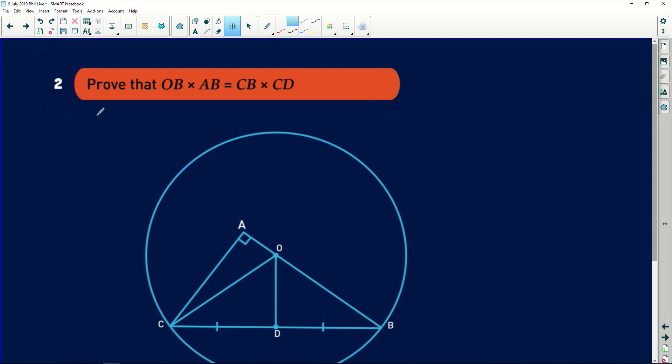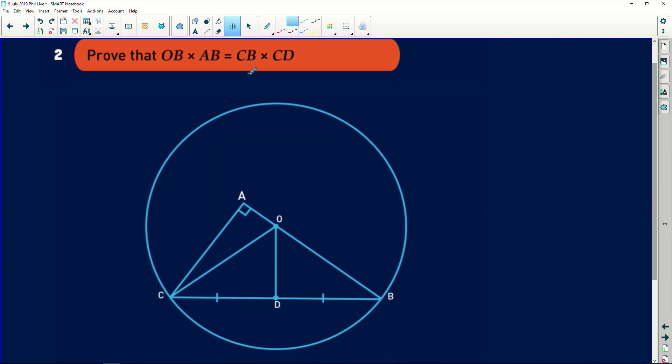Secondly, it says prove that OB multiplied by AB is equal to CB multiplied by CD. The moment you see this kind of format, they're looking for you to try and convert it to ratios. Because remember, we just proved that triangle ABC is similar to triangle DBO. Remember, we established this is 90 degrees. So you're going to have a bunch of ratios that are established by this similarity. So the moment you have it in this kind of format, they're looking to see if you can cross multiply or cross divide to get into a ratio format.